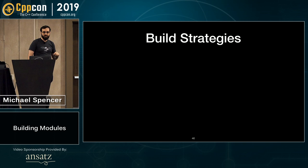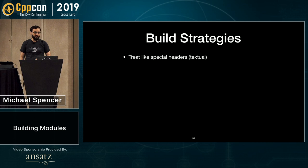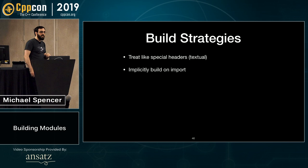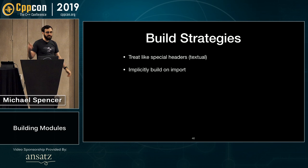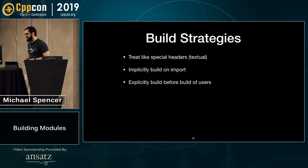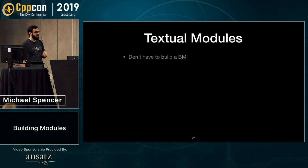Here are three main build strategies. The first is to treat it like a special header — just treat it textually, don't build a BMI. The standard does not define BMIs; you can totally do this. The second is to implicitly build on import — the compiler sees an import, realizes it needs the module, and goes to build it. The third is to explicitly build all modules you depend on before you actually get built, so when the compiler sees an import, it already has it.